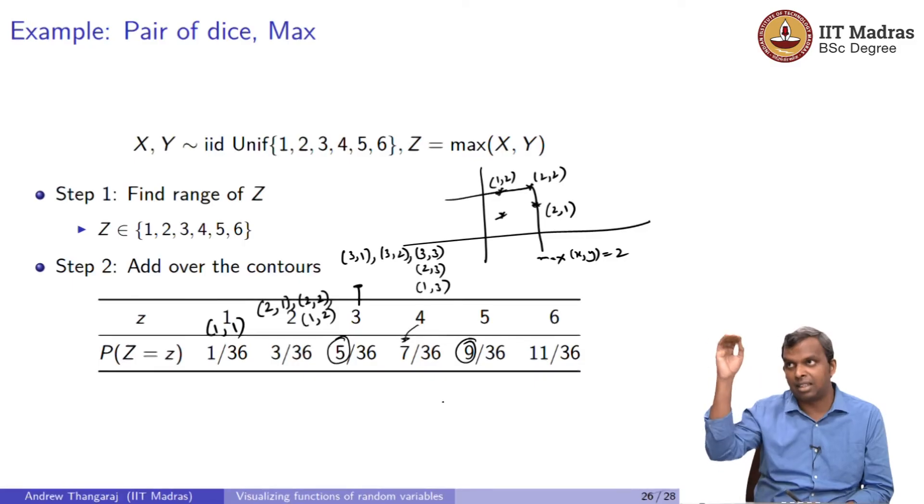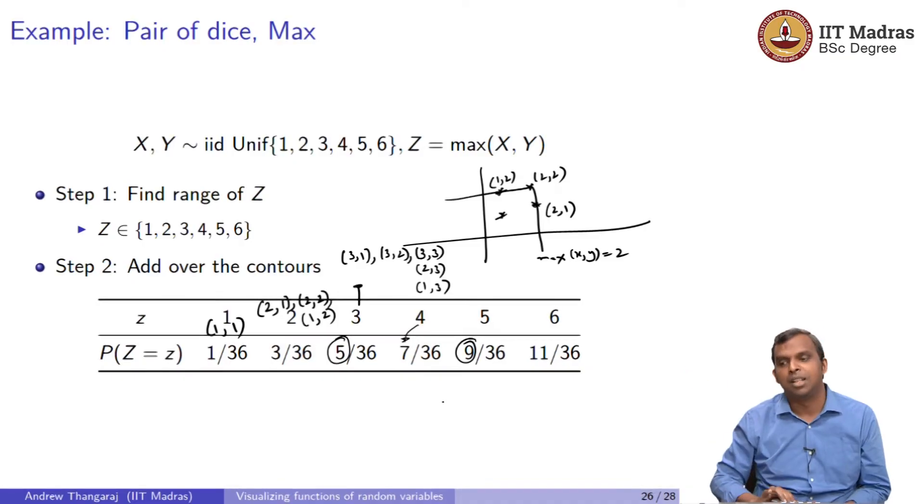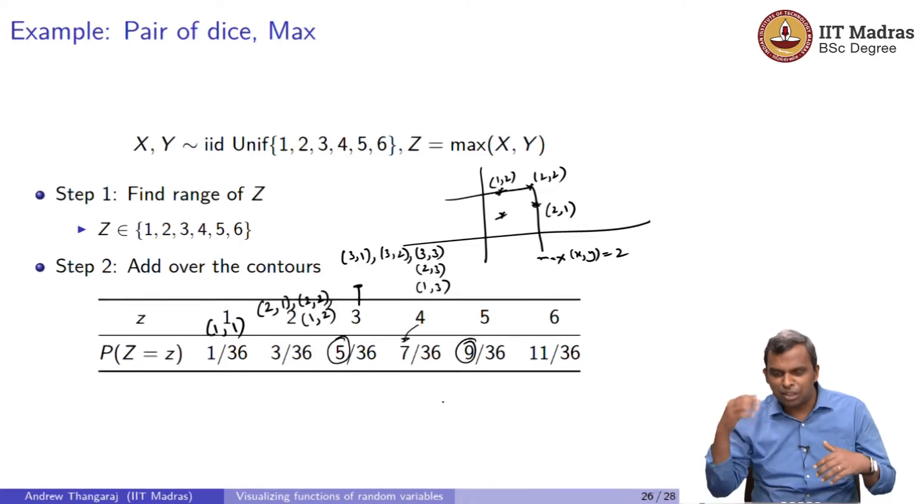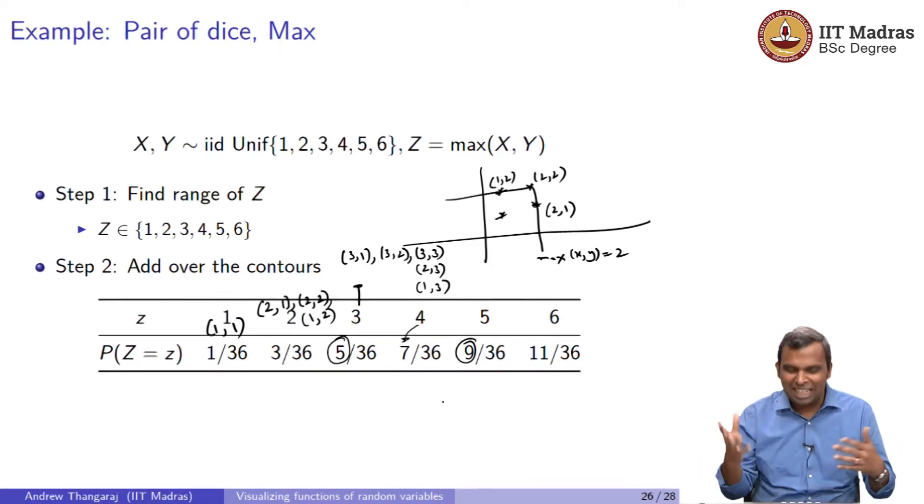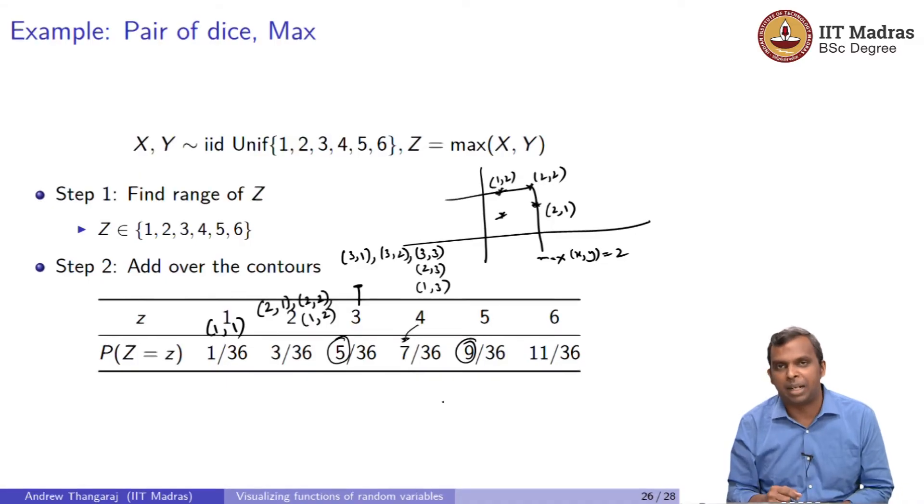6, you will get 11. Again 6 comma 6, 5 values below it, 5 values to the left of it. 10 plus 1, 11. I am doing an intelligent table creation. It's still a table creation except that I am smartly identifying all the values that give me the same repetition, adding over the contours to quickly get the value that I want. This is the way in which you do max of a pair of dice.